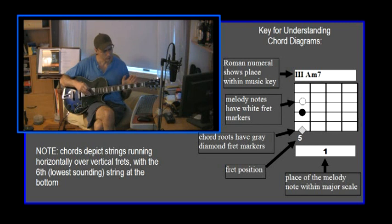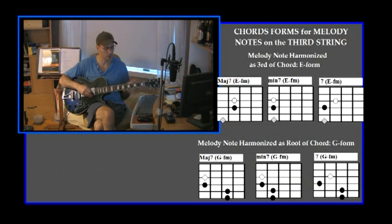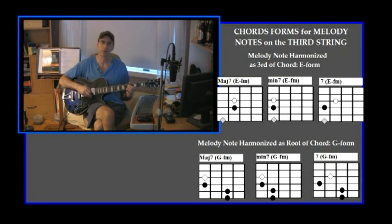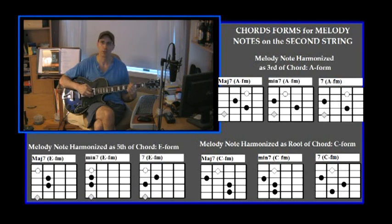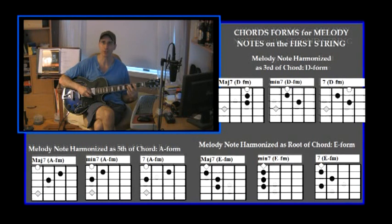The concept I use in order to place melody notes as thirds of chords is knowing the chord forms that carry melody notes as thirds on the third string, the second string, and the first string. If the melody note is on the third string, an E-form chord carries its thirds on the third string. If melody notes exist on the second string, an A-form chord can be used because it carries its thirds on the second string. If the melody notes are on the first string, I'll use a D-form because a D-form carries its thirds on the first string.